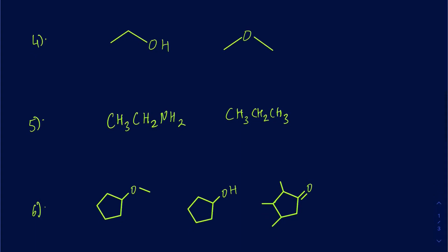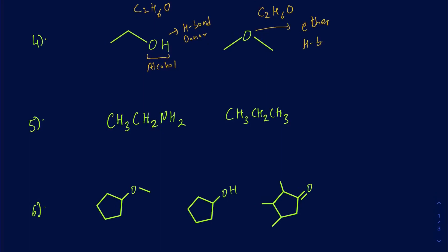This next example shows constitutional isomers with the same formula C2H6O, but different connectivity. One has an alcohol functional group with a hydrogen bond donor. The other has an ether functional group, which is only a hydrogen bond acceptor. Since having a hydrogen bond donor takes priority over a hydrogen bond acceptor, the alcohol is more soluble in water. As the chain on ethers gets bigger, they become more insoluble in water.